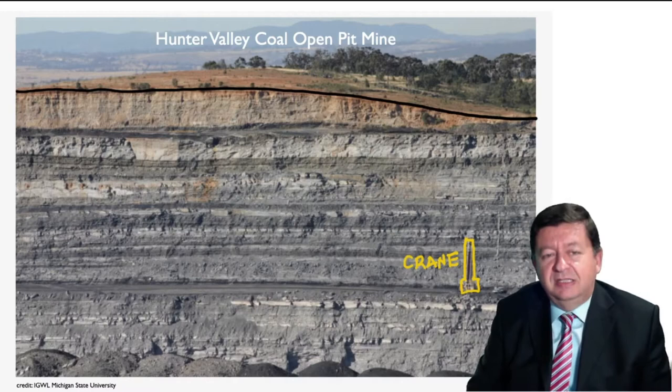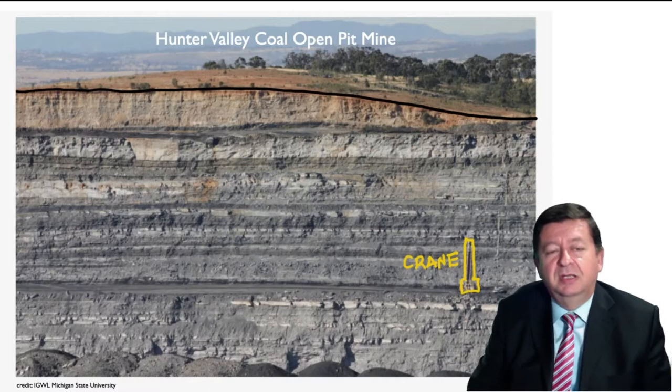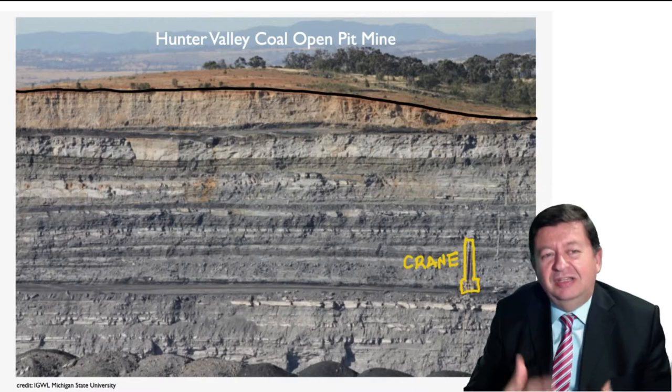We can see that there are many materials that you can differentiate by the colors in the picture, and there is some layering. This is a sedimentary basin, so there is variability in the vertical direction but there is also variability in the horizontal direction. So there is this heterogeneity — these changes that exist underground.